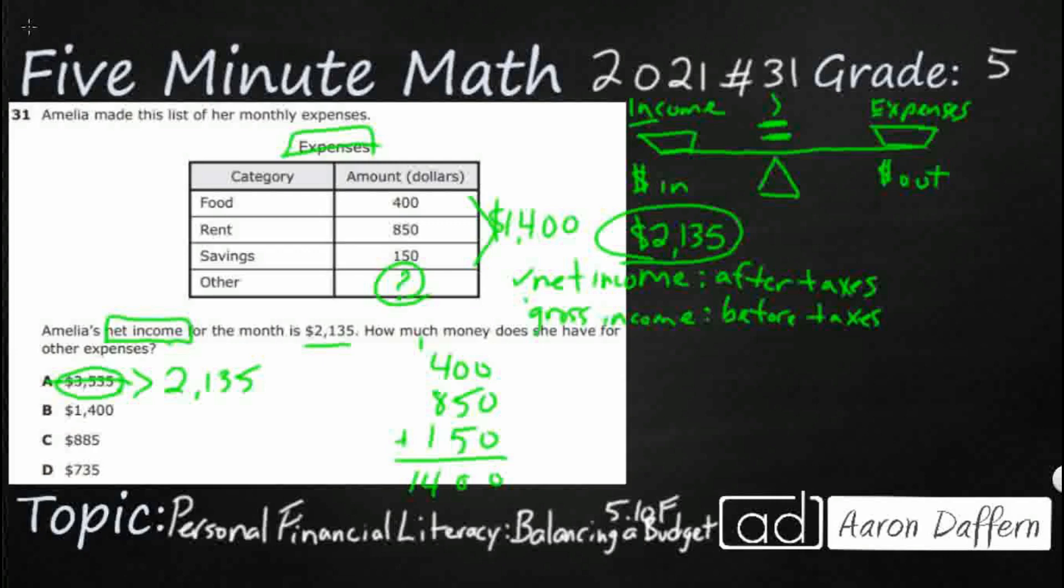So what we can do is we can take a look at a simple subtraction problem. We need to see how far away is $1,400 from $2,135. Let's just subtract the two numbers, and that will tell us how far away these two numbers are. We can put that in our other category. So that's $5, that's $3. You're going to have to regroup a little bit there. That's $11. So $735, and that can go in our other category. The answer is D.